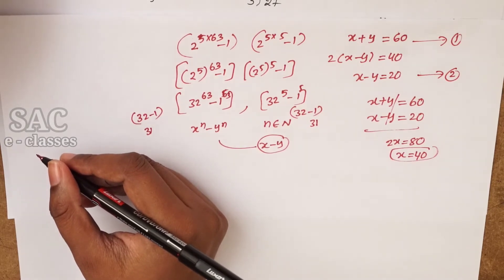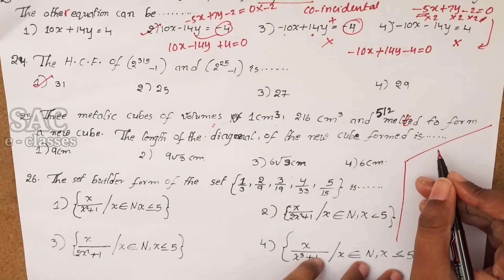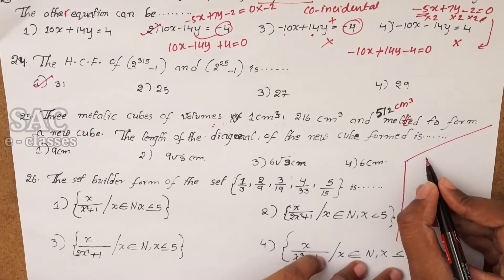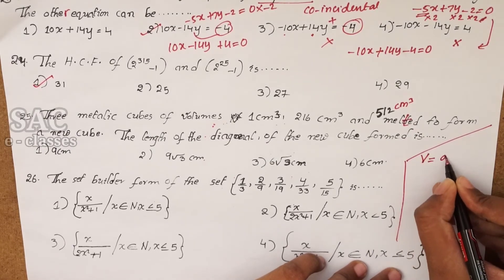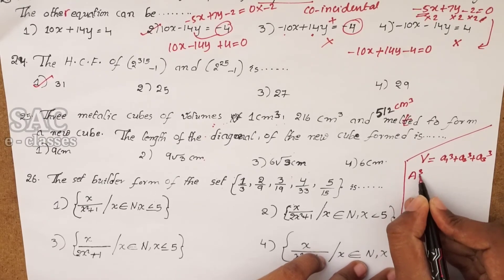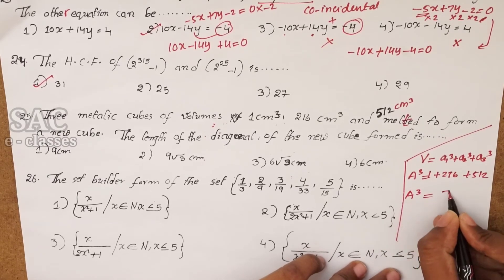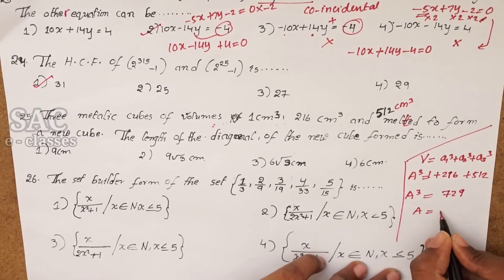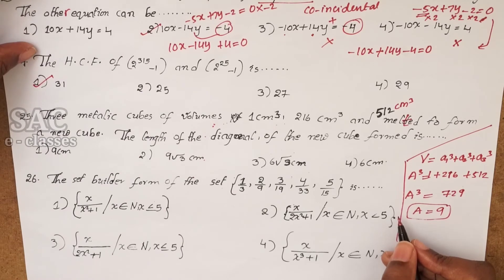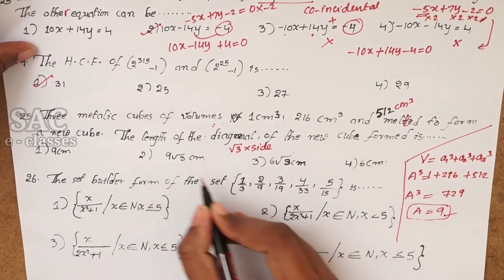Problem 25: three metallic cubes with volumes 1 cm³, 216 cm³, and 512 cm³ are melted to form a new cube. Volume of new cube = 1 + 216 + 512 = 729, so side a = cube root of 729 = 9 cm. The diagonal of the new cube = √3 × side = 9√3 cm.